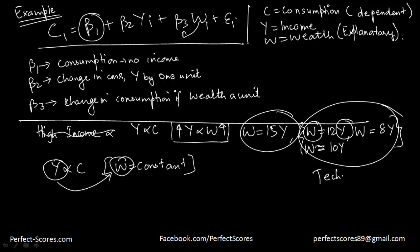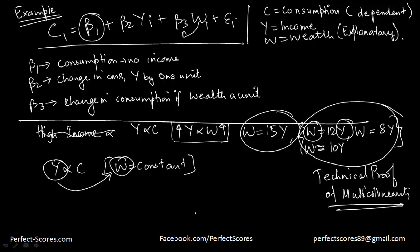In the next video, I'll be giving you the technical proof of multicollinearity. In this video, we understood what multicollinearity is — in layman's language, it is when your explanatory variables are in some sort of relationship with each other, whether a linear relation or any other relation. That means income is going to get affected by wealth, or wealth is going to get affected by income. Then there is a problem of multicollinearity, and our t-statistics and F-values are going to be insignificant.